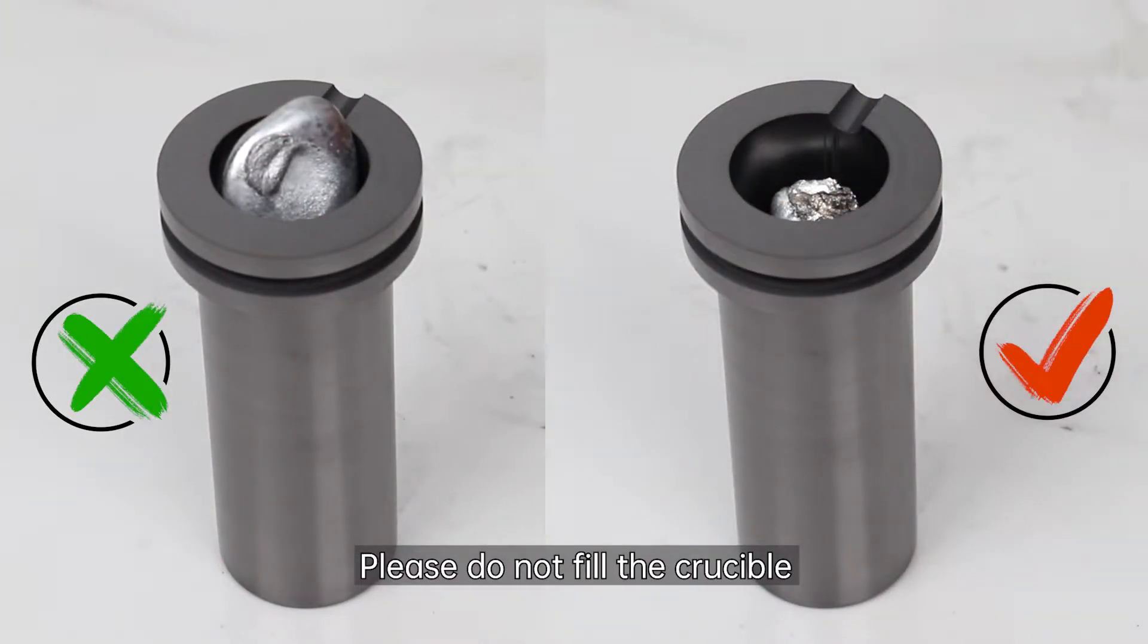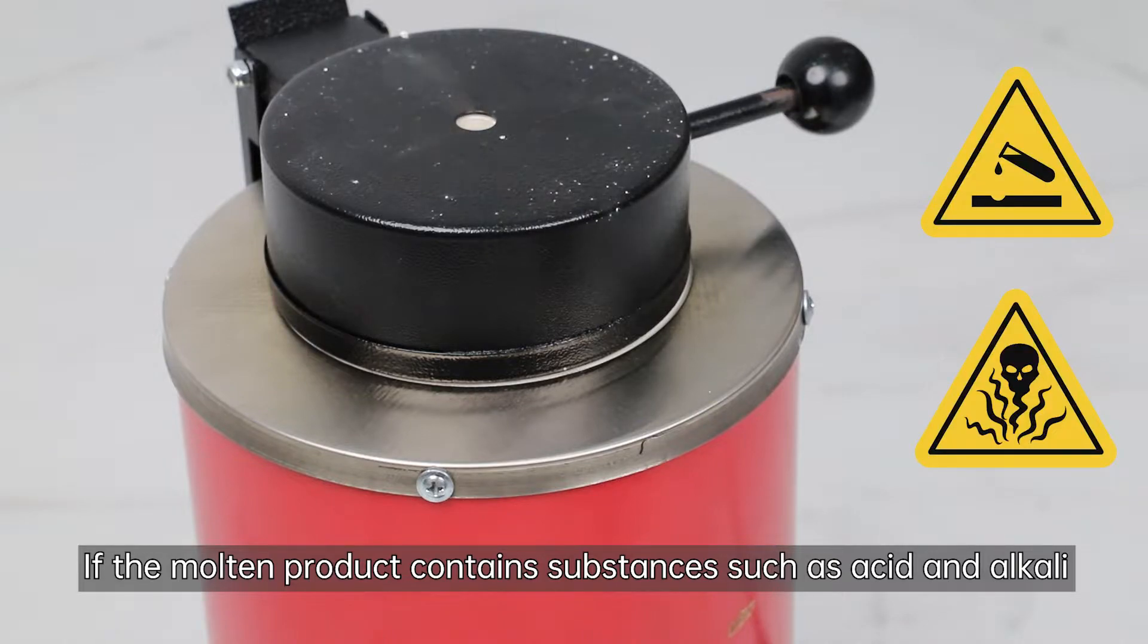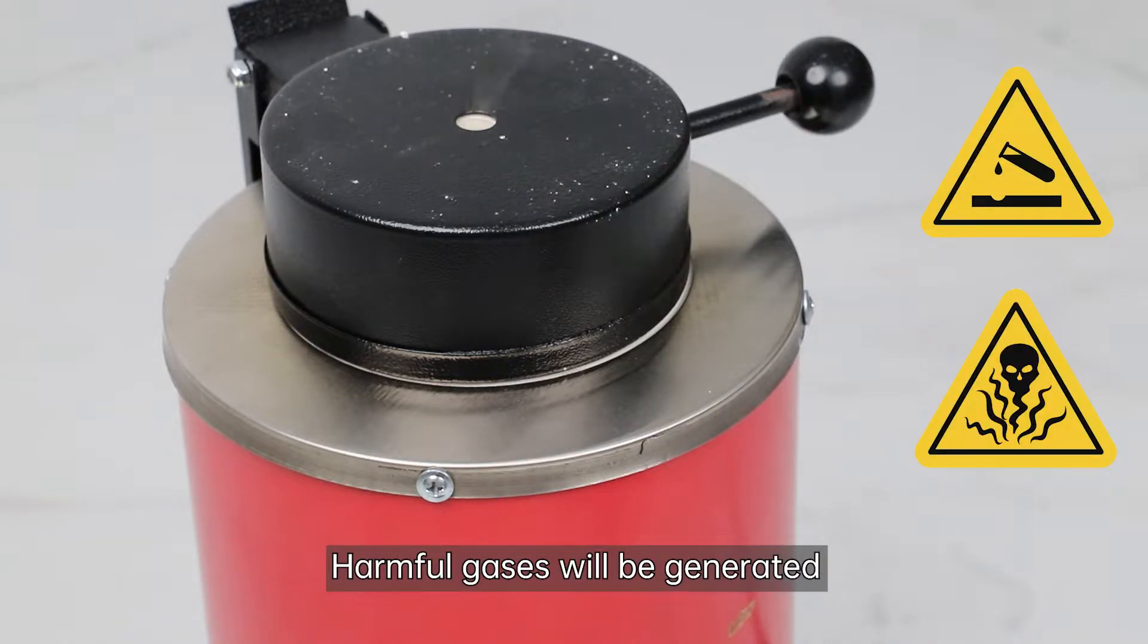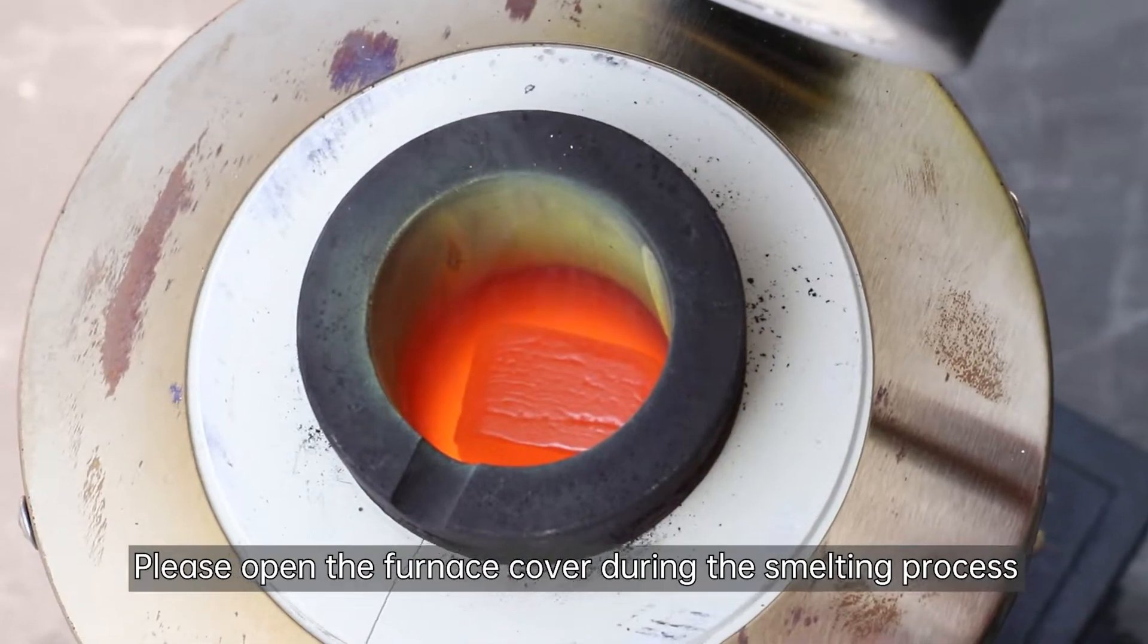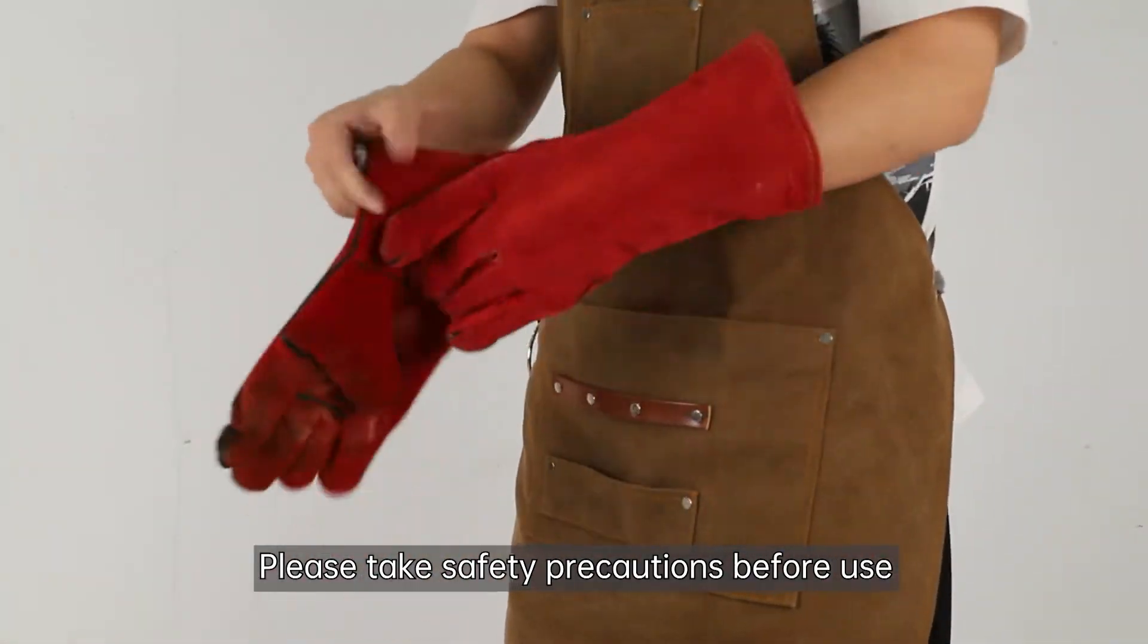Please do not fill the crucible. If the molten product contains substances such as acid and alkali, harmful gases will be generated. Please open the furnace cover during the smelting process. Preparation before operation: please take safety precautions before use.